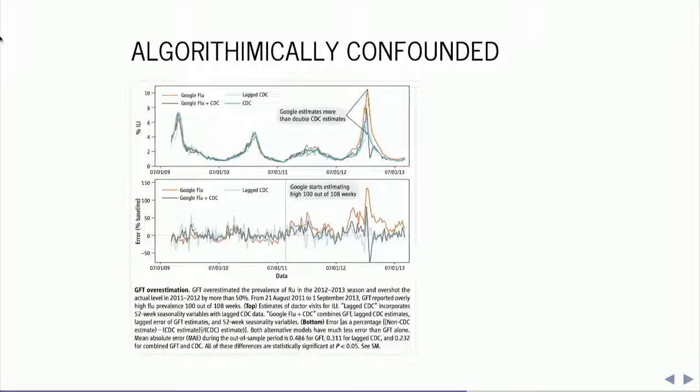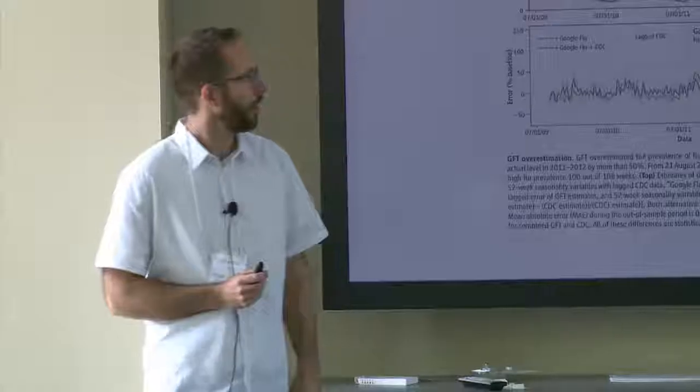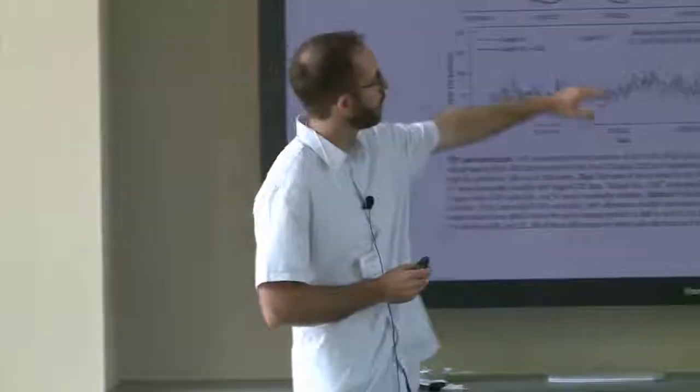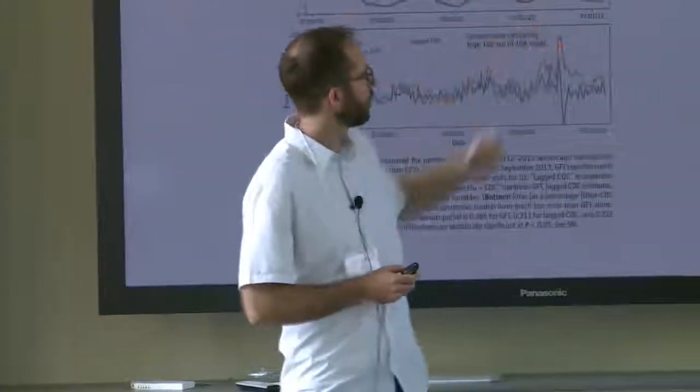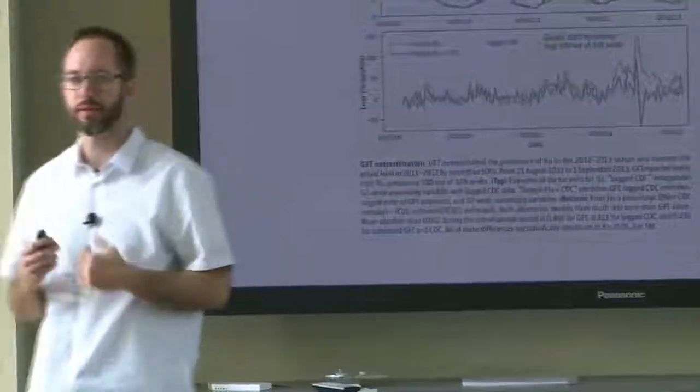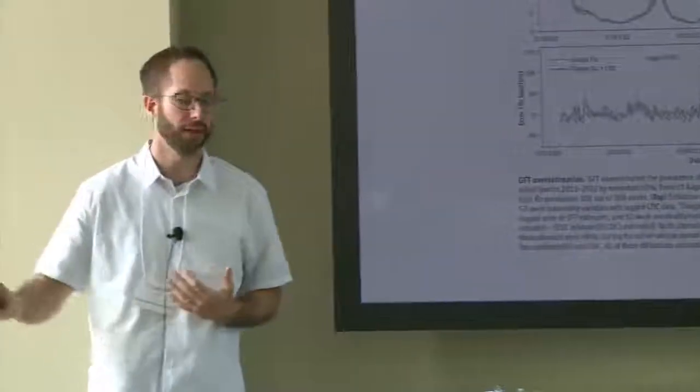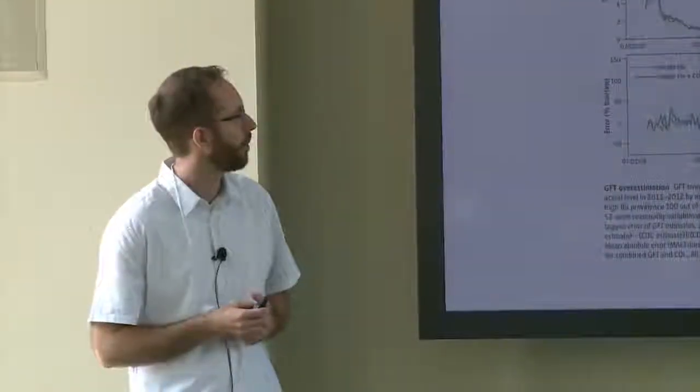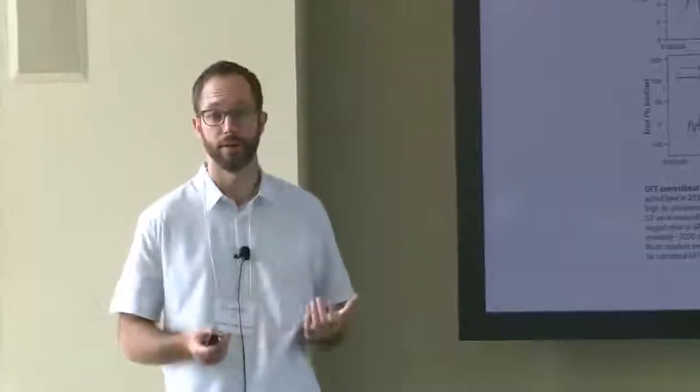And so what we see up here in this top panel is in the orange is the Google flu estimate of the prevalence of influenza over time for about two years. And then in this blue line here is the estimate from the Centers for Disease Control, which is the body of the US government responsible for tracking disease. And then we have some lags in here too. And what we see is for two years there's really great tracking. Google flu is really just nailing it.